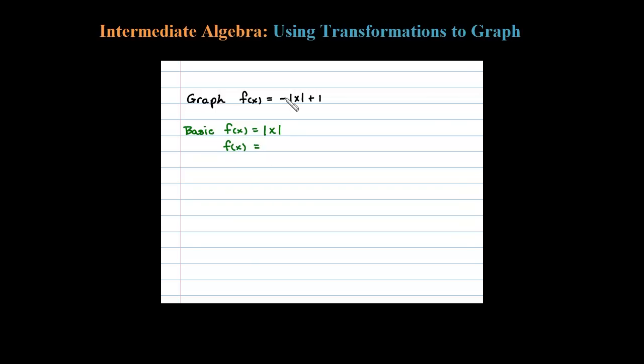Now identify all the translations. First, notice there's a negative in front. When you multiply a function by negative one, that's actually a reflection about the x-axis.